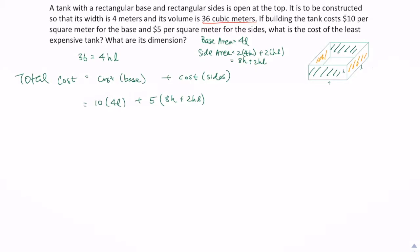Now what we can do here is to simplify the cost equation a little bit, which is going to be 40l plus 40h plus 10hl. So we have a cost equation which is 40l plus 40h plus 10hl.